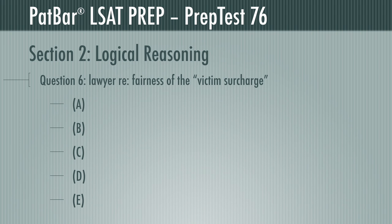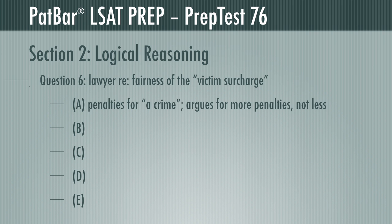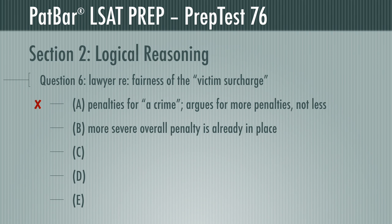Question 6 presents a lawyer's argument that the so-called victim surcharge should not apply to perpetrators of nonviolent crimes if its purpose is to fund services specific to victims of violent crimes. You are to find the principle that would most help justify that lawyer's argument. We can eliminate A immediately — the penalties-for-a-crime principle would apply to any crime, not just violent ones, and would contradict the lawyer's argument that some criminals shouldn't pay this surcharge. B makes no sense, since that principle is already in place — the perpetrator of a violent crime already gets a higher overall penalty.